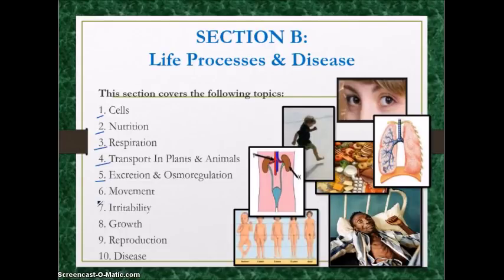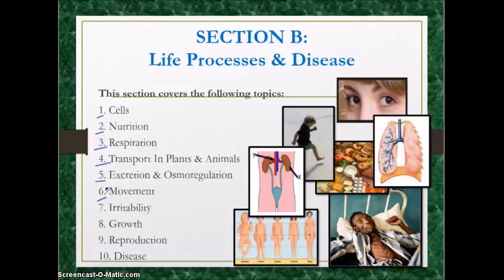Moving on to movement. You should know the different types of movement in plants and animals — whole movement, part movement, and growth movement. All three are shown in animals, while plants only show part movement and growth movement. For bones, know the bones of the skeleton, the different types of bones, types of joints, muscle action, and how biceps and triceps work. Know the importance of locomotion in humans and animals.